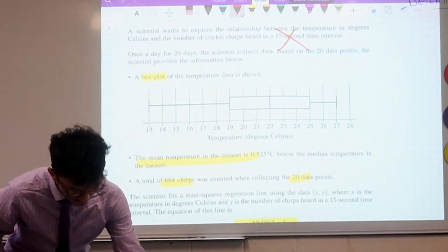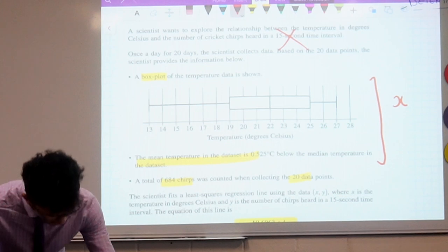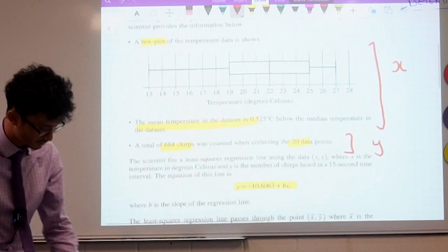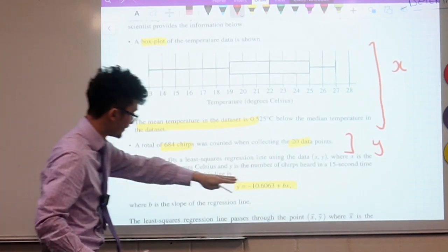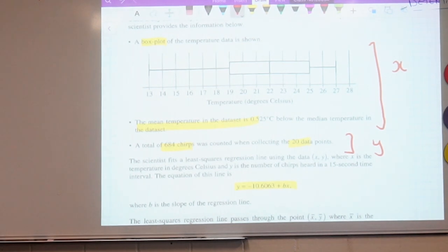So essentially we've got two things going on here. This is your information about x, about the temperature. This is your information about y. So we can kind of compartmentalize these and treat them separately. But bringing them together, that's what this equation here is for. And we're actually going to need that to answer the question. But in order to do that, you'll notice in the equation, we don't know what b is.